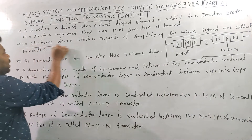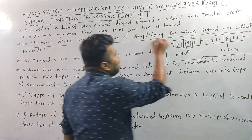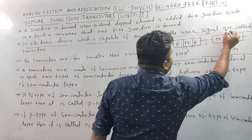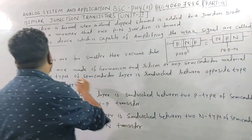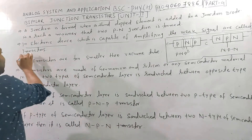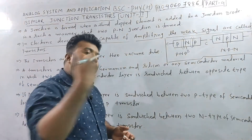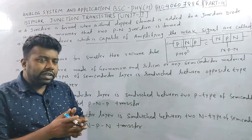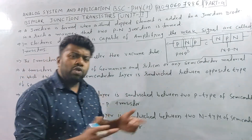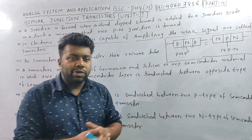In electronic devices, a component which is capable of amplifying a weak signal is called a transistor. The transistor amplifies the weak signal. It works with AC signal and DC signal.